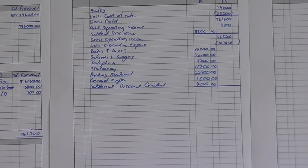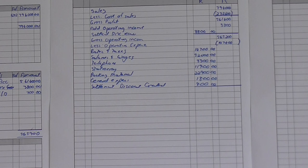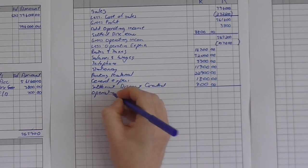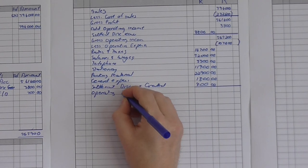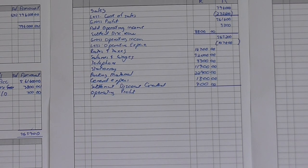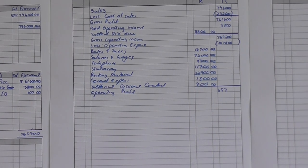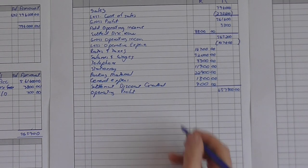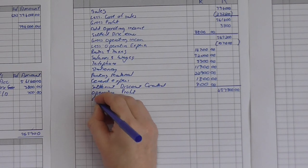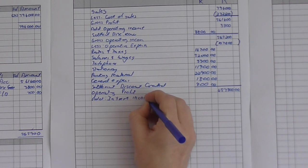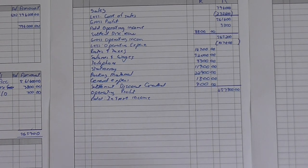So what did we calculate there? Your operating profit is your gross operating income minus your operating expenses: 565,200 minus 107,400 = 457,800. And now only do you add your interest income, which is the interest on your fixed deposit: 700.